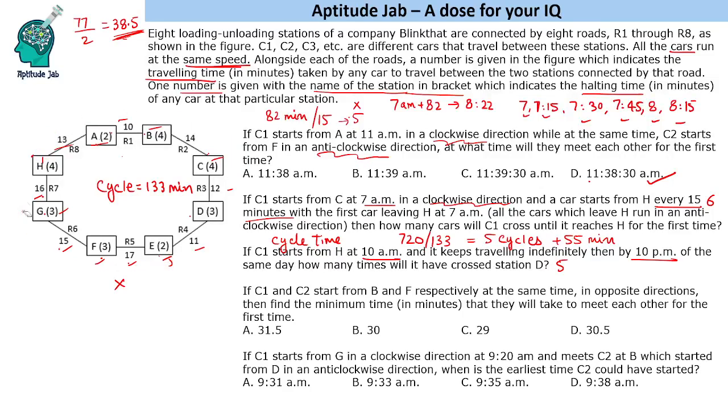The next question is, if C1 and C2 start from B and F respectively at the same time in opposite directions, find the minimum time that they will take to meet each other for the first time. B and F start in opposite directions.